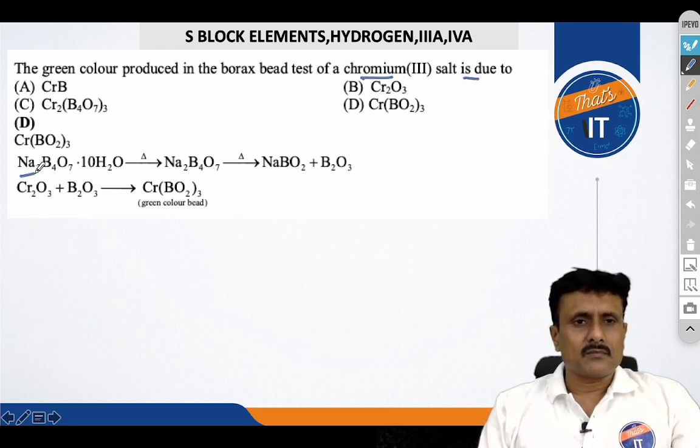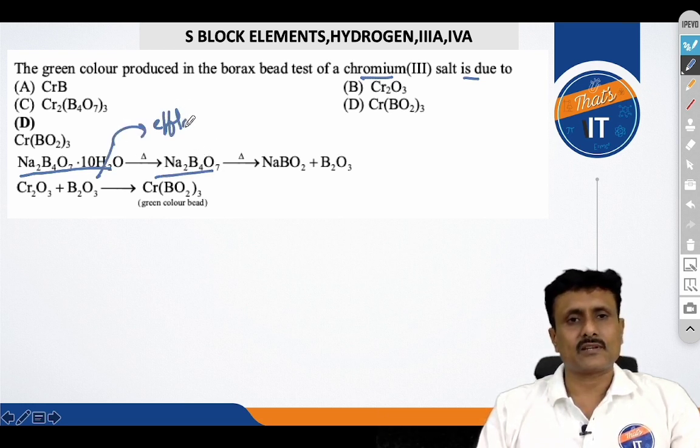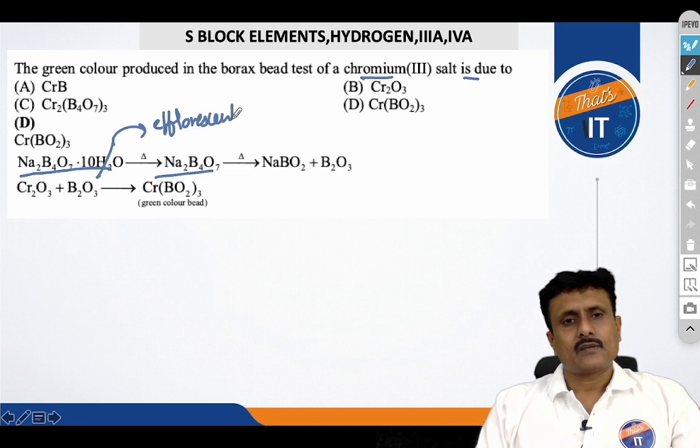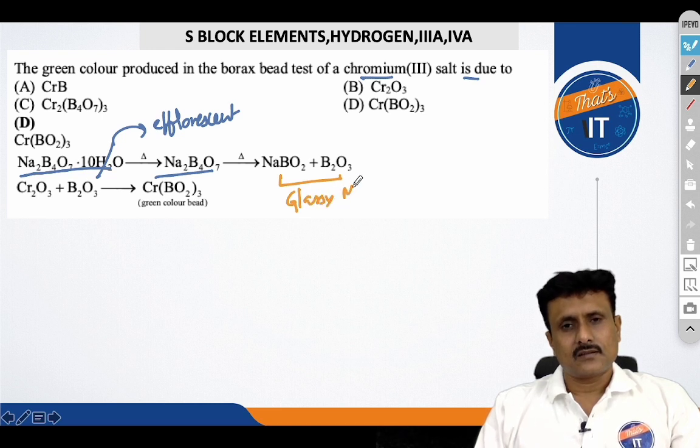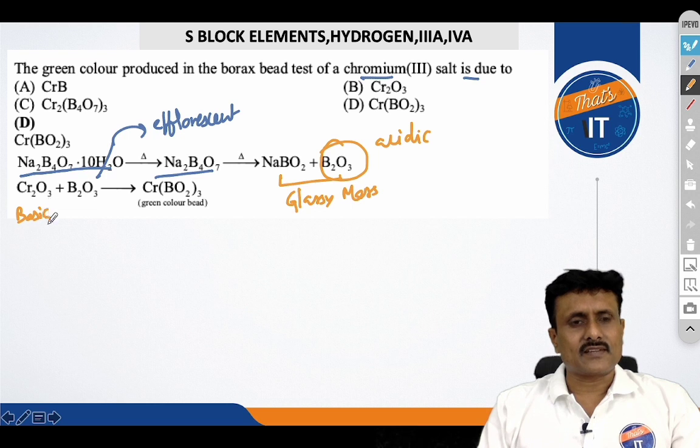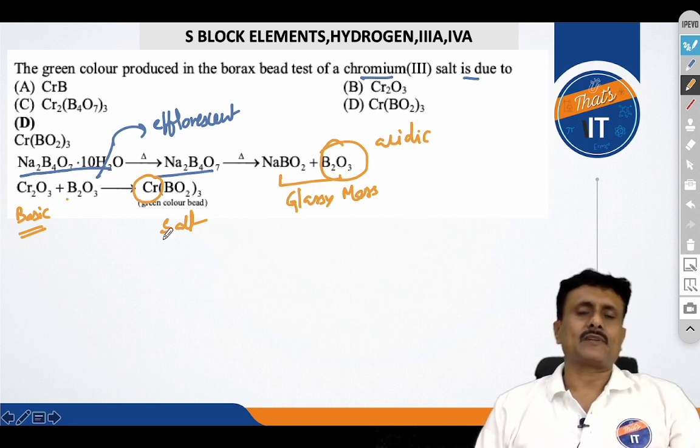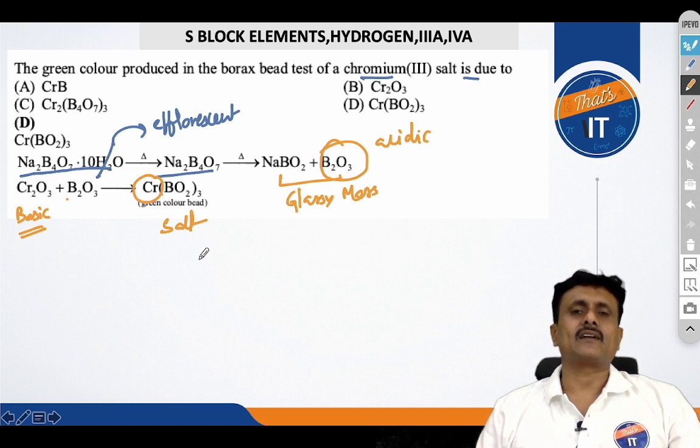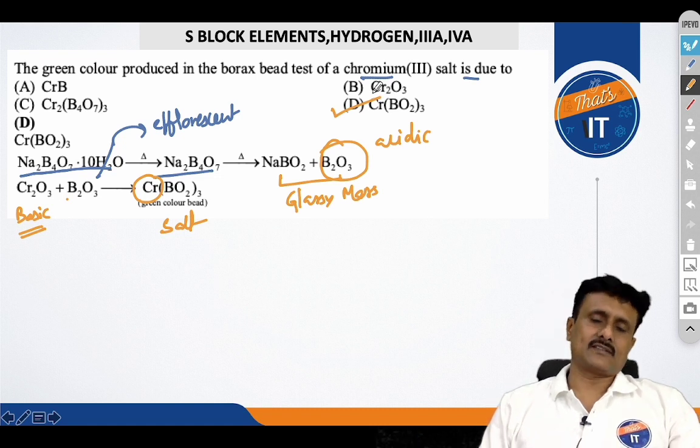Now, you can see the green color produced in the borax bead test of chromium salt. You know, borax bead test. Borax is heated so that it loses water first. Because it is efflorescent. Loses water upon heating. This upon further heating, you know that you will be getting a glassy mass. That is bead. And out of which B2O3 by nature is acidic. It is going to react with the basic oxides of the transition metals to give you a salt. And depending upon the element here, different colors are obtained. You know that copper has blue, chromium has green, etc. So, this clearly says that the option D is the right answer for this question.